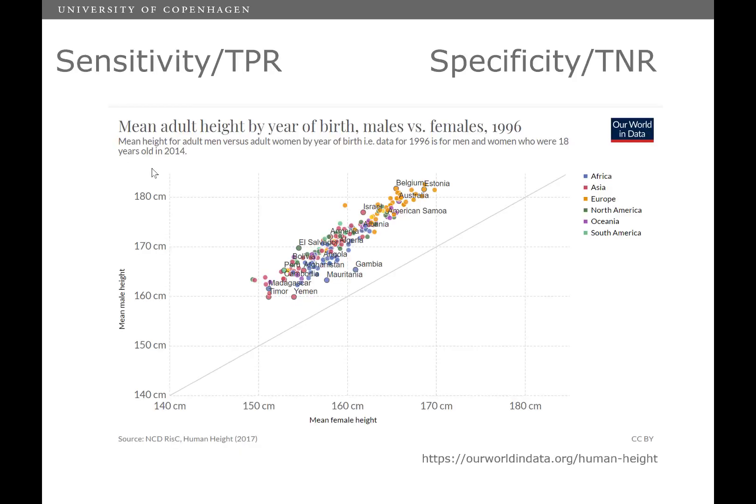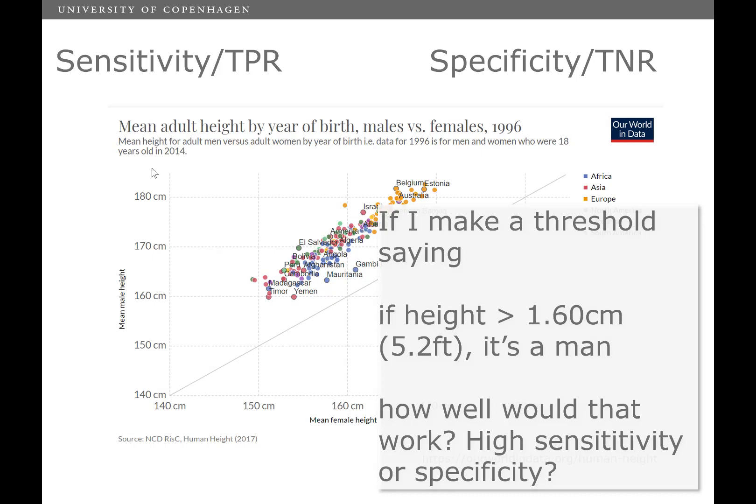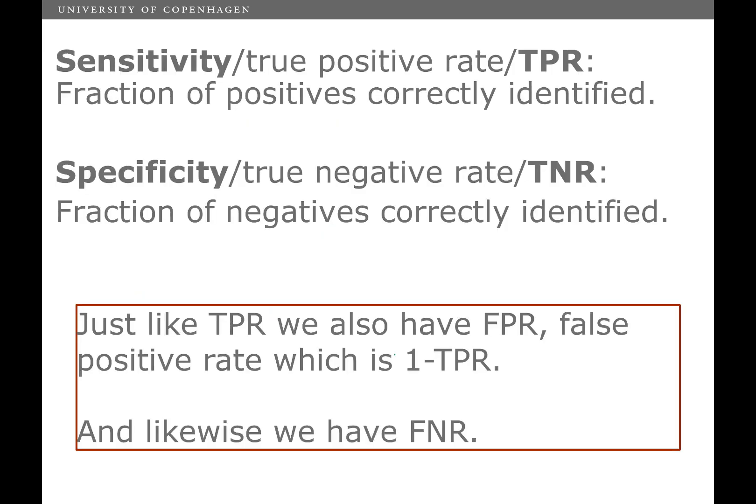Let's look at the data set. This is the average height of males and females in different countries. And let's say I want to classify whether you're man or woman, depending on your height. And let's say I put a threshold, let me say 150. Let's say that if you're above 150, then you're a man. And if you're below, you're not. So, how well would that work? Would that classification model have a high sensitivity? And would it have a high specificity? Well, if you think about it, if I say that everyone above 150 is a man, I'm basically going to call everyone a man. So, my sensitivity is going to be excellent. I'm going to get all the men correctly. But my specificity is going to be terrible.